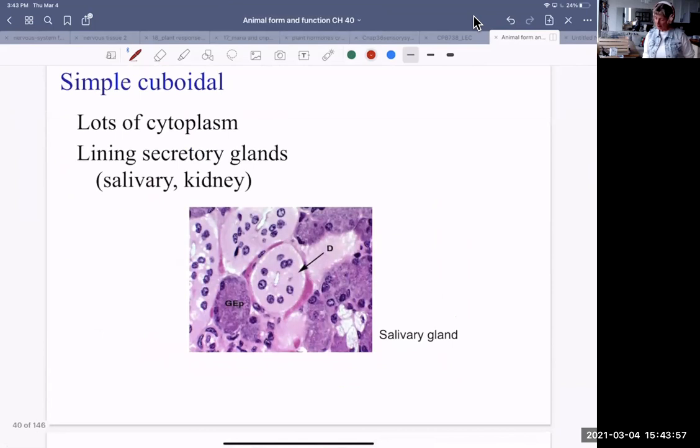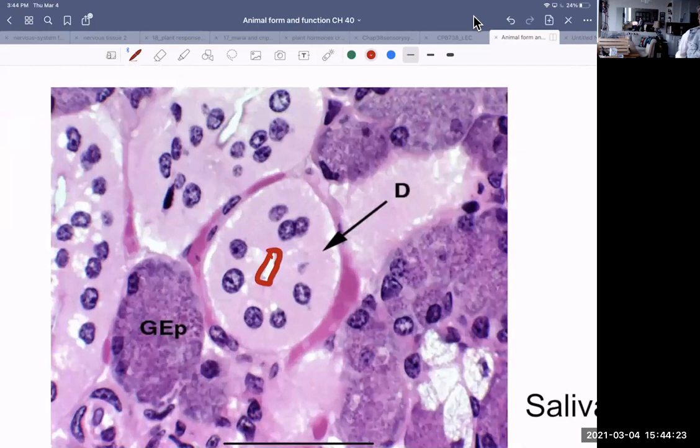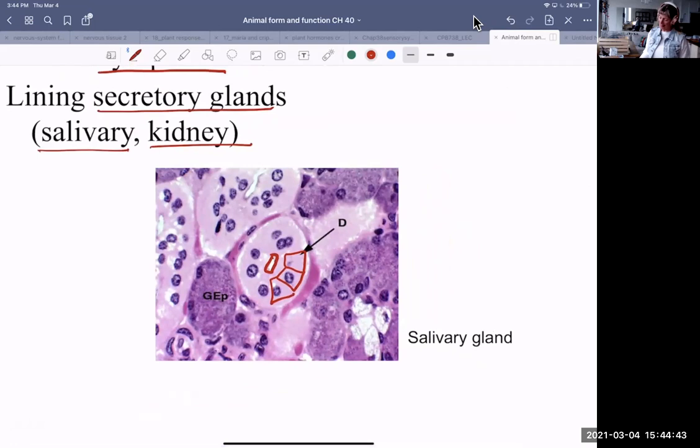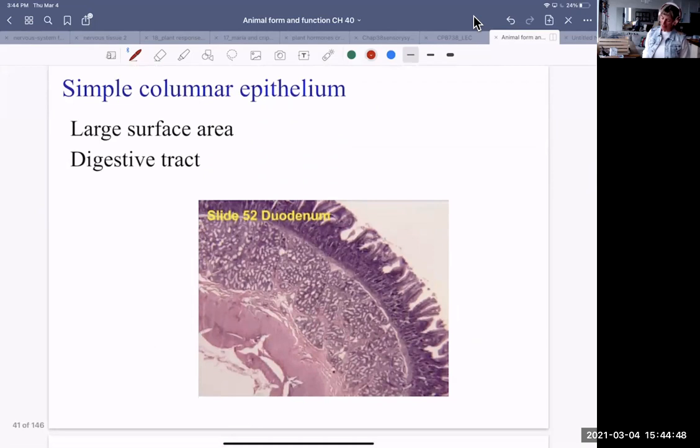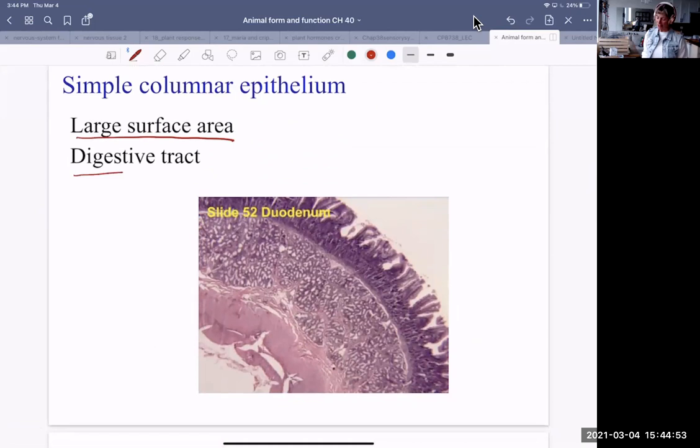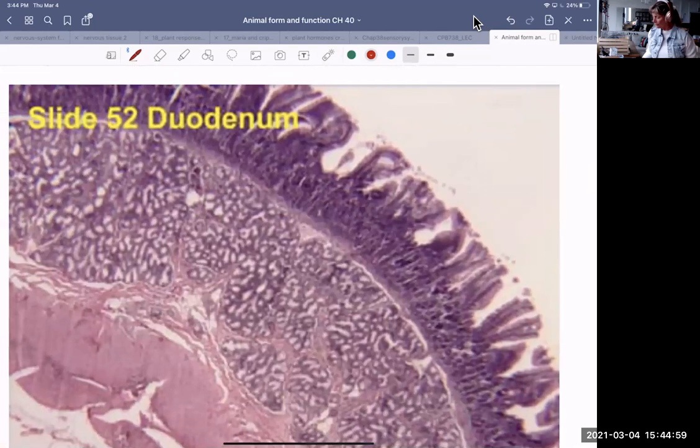Simple cuboidal. The difference is there's loads of cytoplasm in cuboidal cells because the cell itself is producing products for excretion. So they line secretory glands, salivary glands, the kidneys, the tubules of the kidney. And you can always recognize it because generally, you look inside here. This is the lumen of the tube. So it's empty until these cuboidal cells secrete their substances into it. So this could, for example, I mean, this is a salivary gland, but other glands look very similar, like mammary glands, for example.